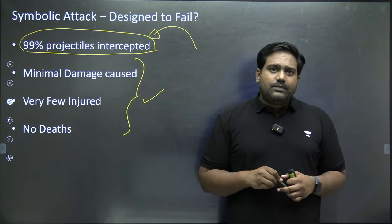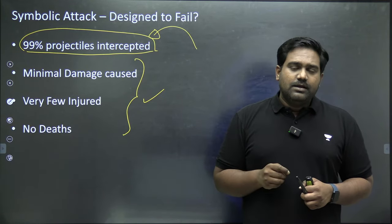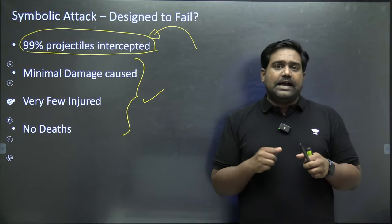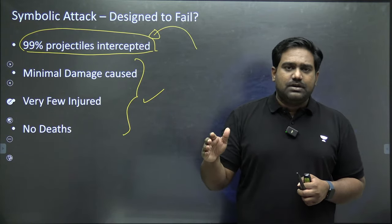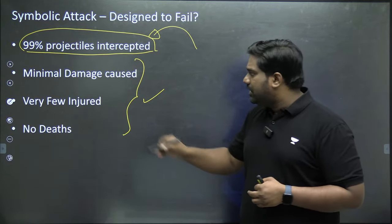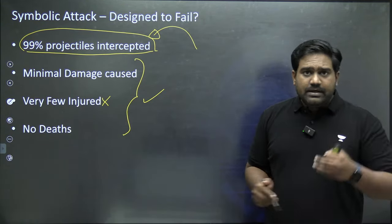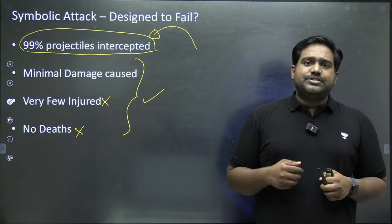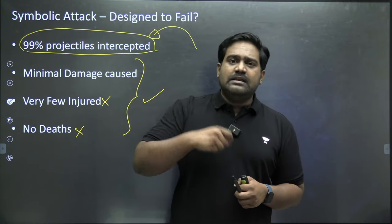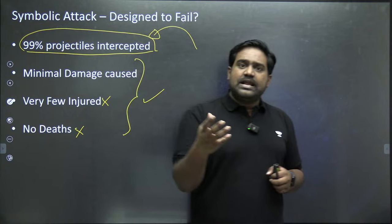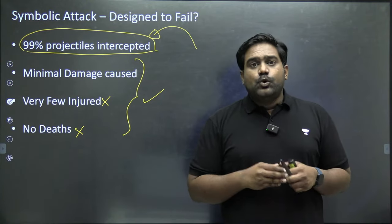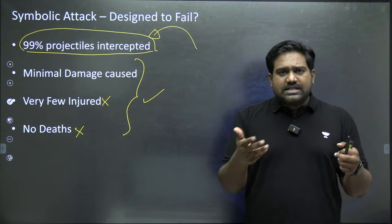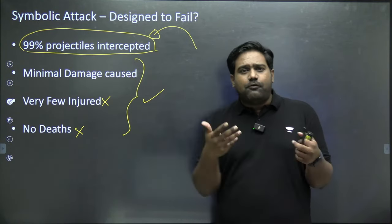If you look at the outcome of these attacks, the majority of projectiles were successfully intercepted by Israel and its Western allies. Almost 99% of the drones and missiles launched by Iran were successfully intercepted, even before they entered Israeli territory. The damage on Israel has been very minimal — apart from one strike on an Israeli air base, there has been no serious damage. Very few people have been injured and there have been no deaths reported by Israel.